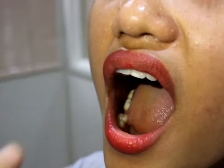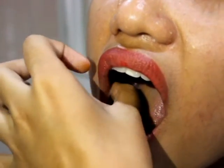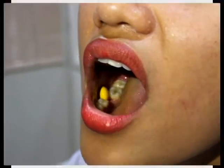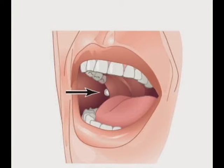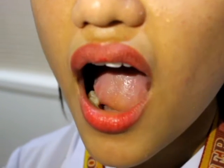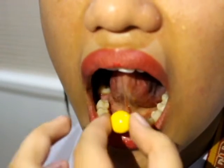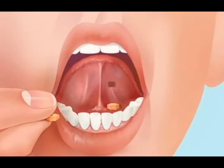In buccal administration, a medication is held in the mouth against the mucous membrane of the cheek until the drug dissolves. The drug may act locally on the mucous membrane of the mouth or systemically when it is swallowed in the saliva. In sublingual administration, a drug is placed under the tongue where it dissolves. In a relatively short time, the drug is largely absorbed into the blood vessels on the underside of the tongue. The medication should not be swallowed.